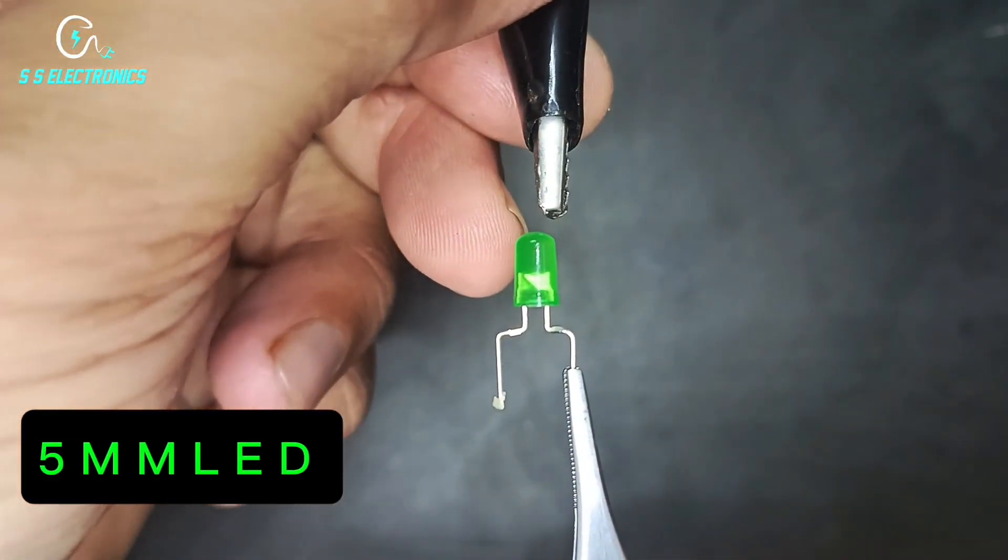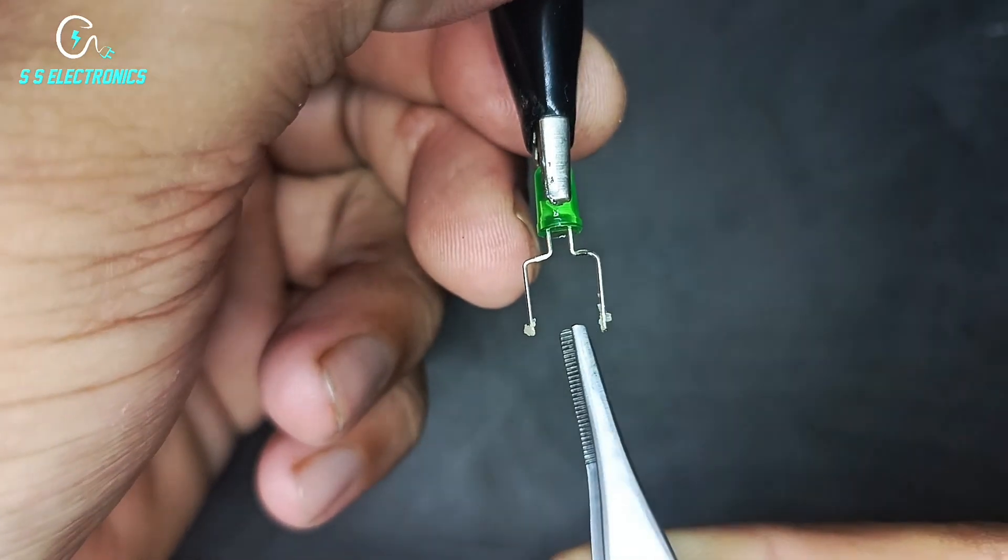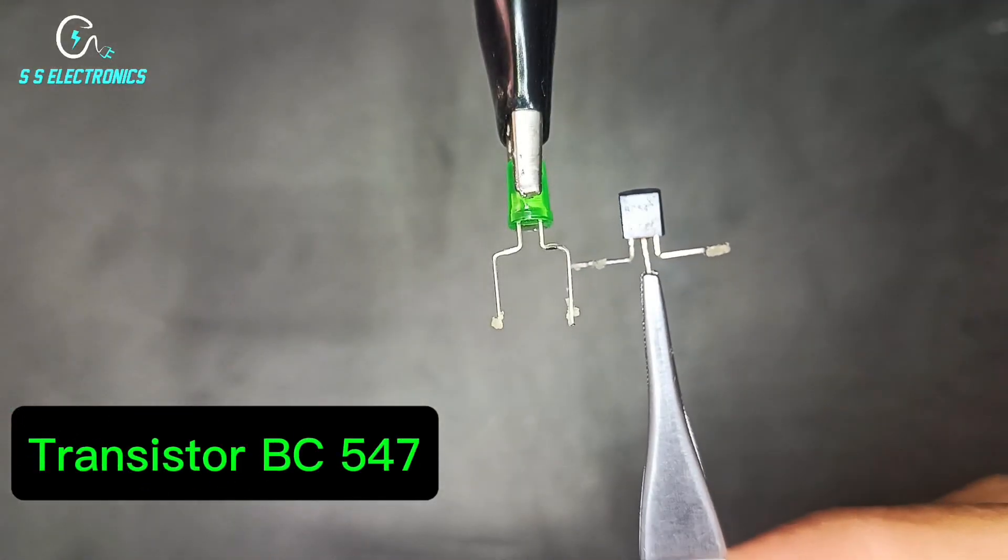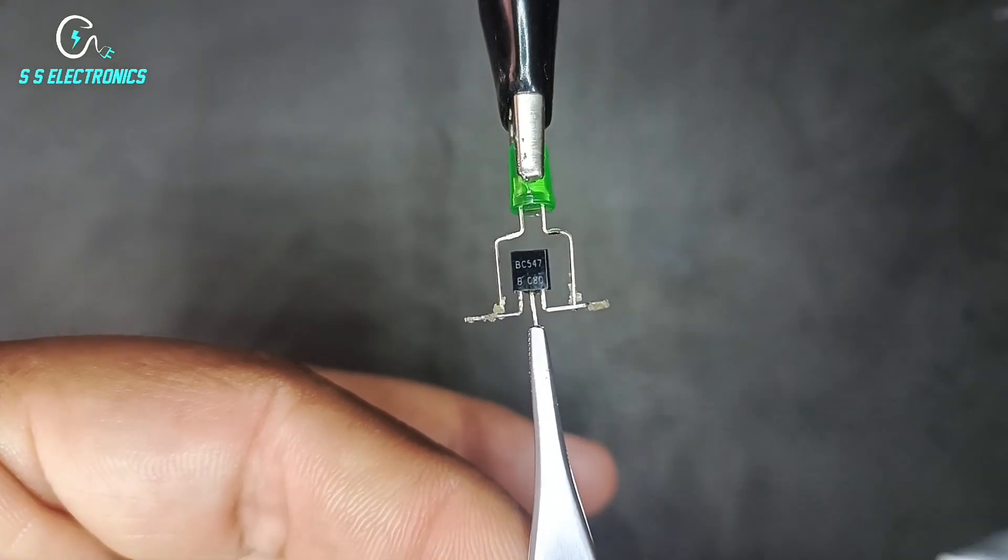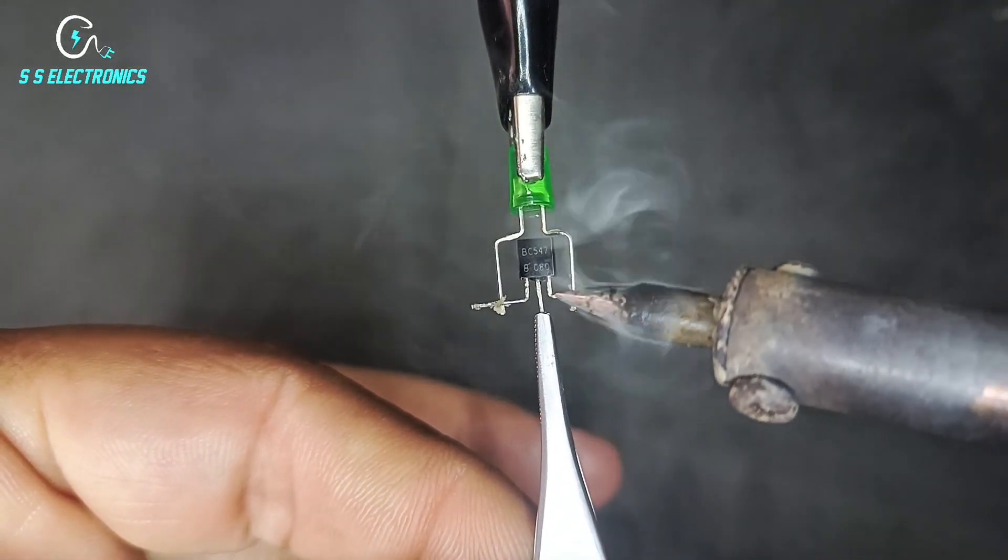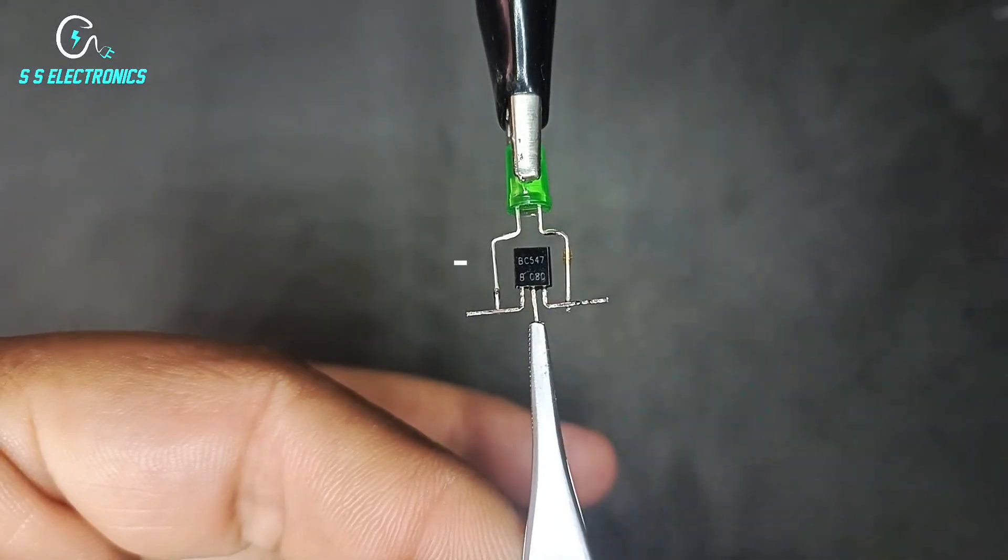5mm LED. Transistor BC547. Transistor emitter pin connecting with LED positive side. Transistor collector pin connecting with LED negative side.